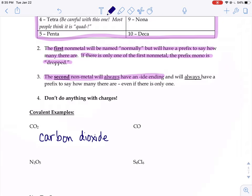But what about CO? This is carbon monoxide. And it follows those rules there. The first nonmetal, the C, we name it normally, carbon. There's only one of them. We drop the mono.